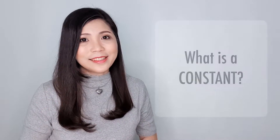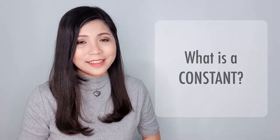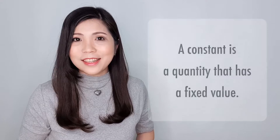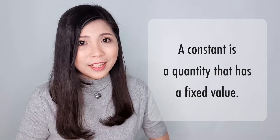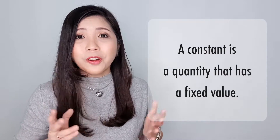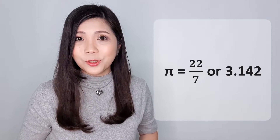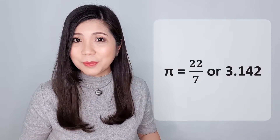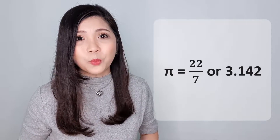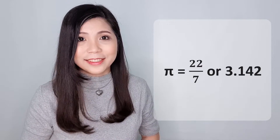What is a constant? A constant is a quantity that has a fixed value. For example, the value of pi is 22 over 7, or in decimal, 3.142.